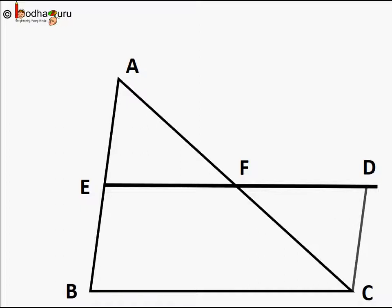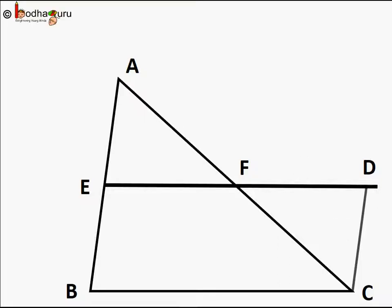To prove the theorem, we draw a line parallel to AB at point C, and we extend EF such that it intersects that line — say it intersects the line at point D.